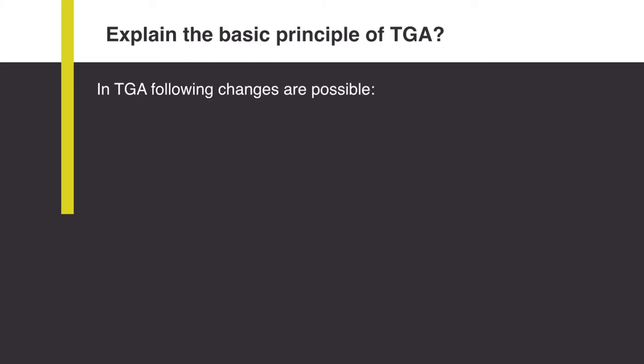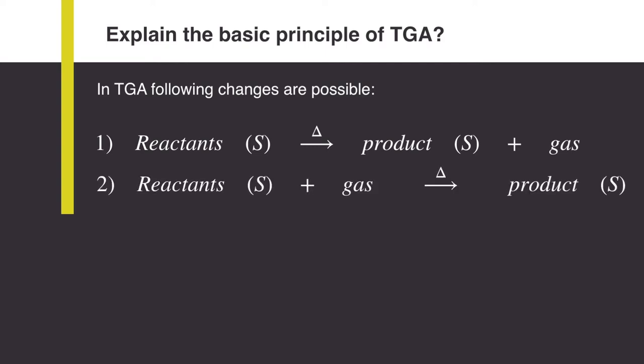In TGA, following changes are possible. First, a solid reactant when heated produces some product and gas is emitted out. Or, in other cases, the reactants can combine with gases at high temperature to produce products. Usually, we do not perform the second type of change in the laboratory.